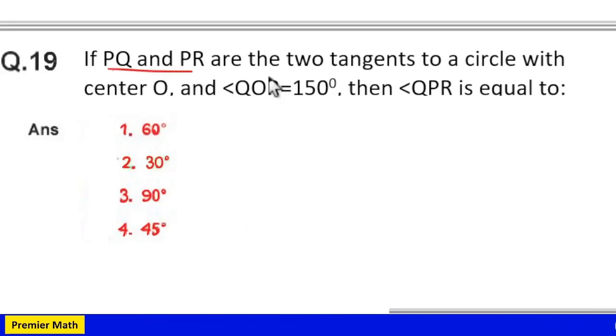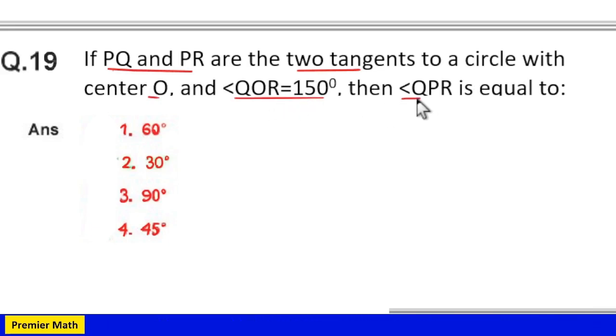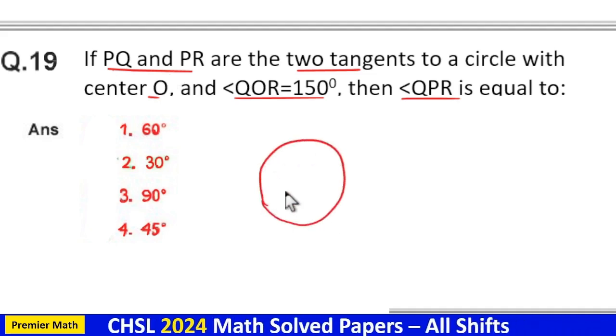If PQ and PR are two tangents to a circle with center O, and angle QOR is 150 degrees, then angle QPR is equal to what? Here this is the circle with center O.